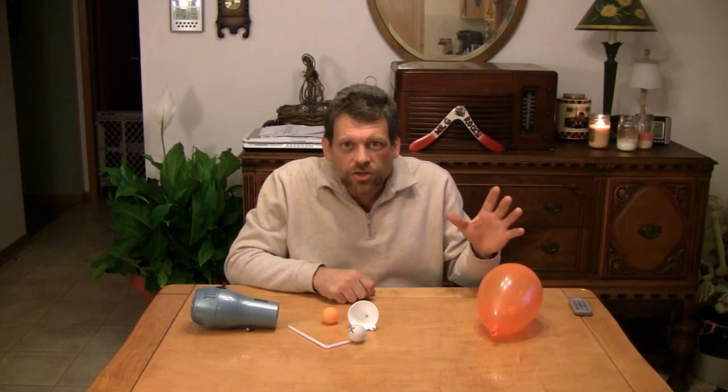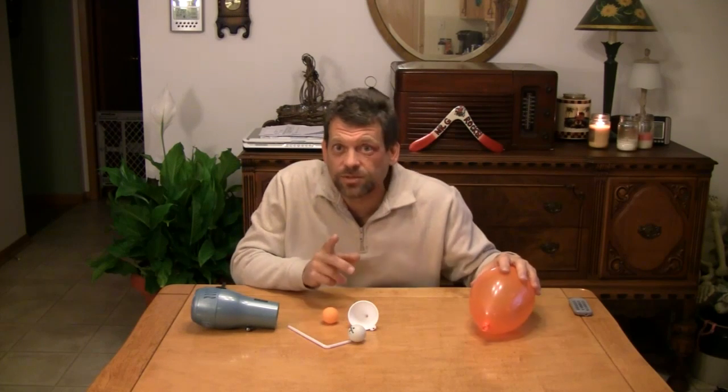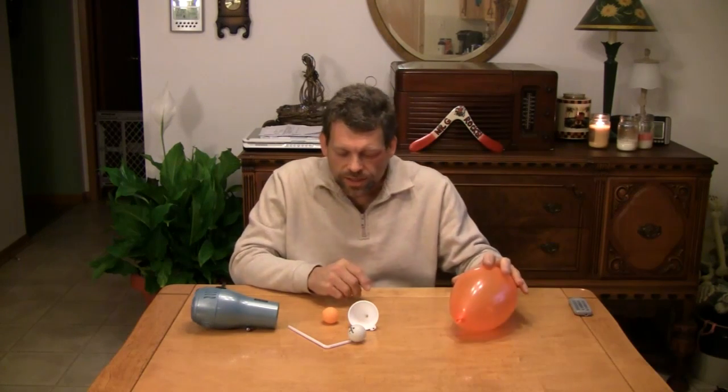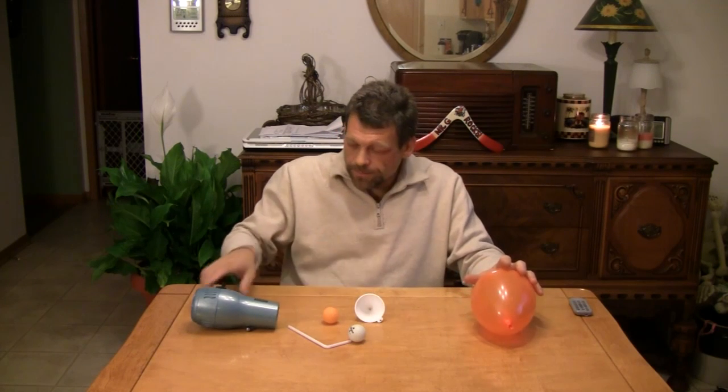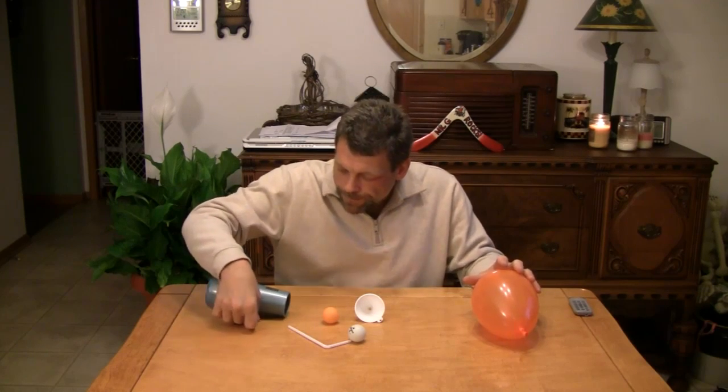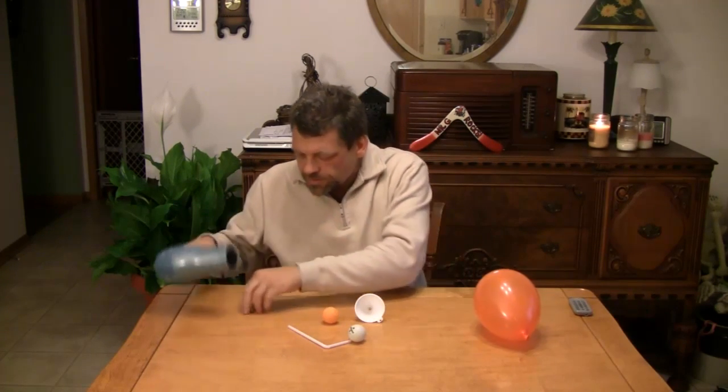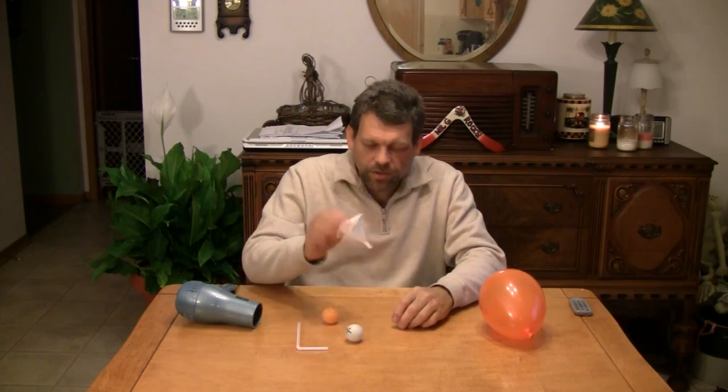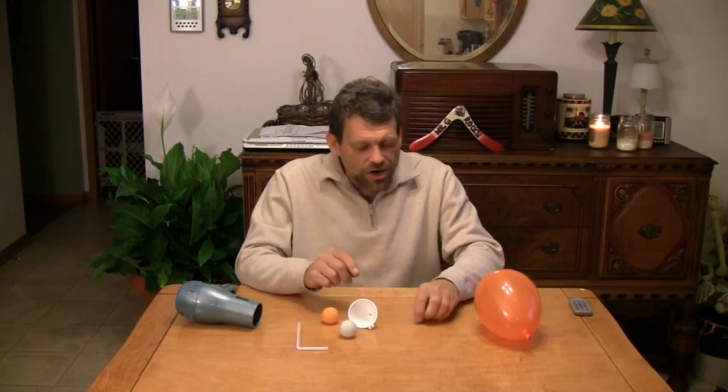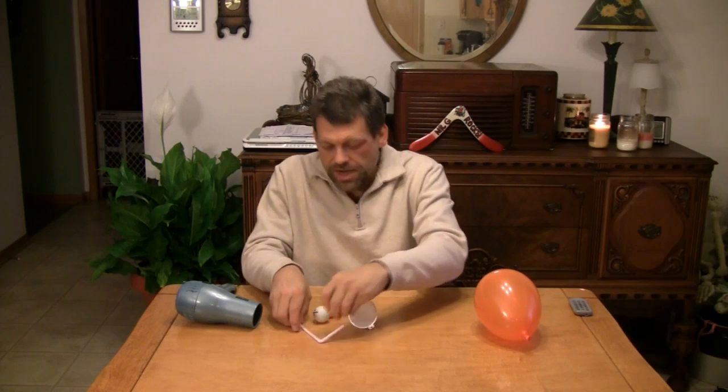I'm going to demonstrate the Bernoulli Principle using some ordinary household items. The ordinary household items that we're going to use today are a balloon, some ping pong balls, a funnel, a blow dryer, a bendable drinking straw, and a metal ball bearing. Bendable drinking straw, ball bearing, and a little plastic funnel as well.